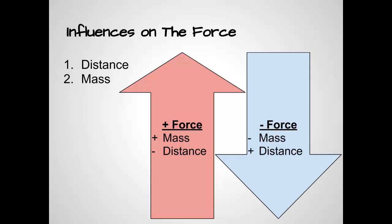You can see in the red arrow pointing up, that's to demonstrate that the force is increasing, and then in the blue arrow, that force is decreasing on the right. To have a greater gravitational force, an increase in force, two things must happen.